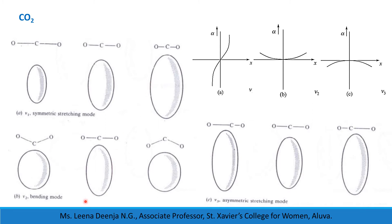Now we consider the bending mode. During the bending, there is a change in shape of the polarizability ellipsoid. But if we plot alpha versus x, near the equilibrium position, d(alpha)/dx equals zero. So near the equilibrium position, there is no change in the polarizability ellipsoid, and this mode of vibration is Raman Inactive.